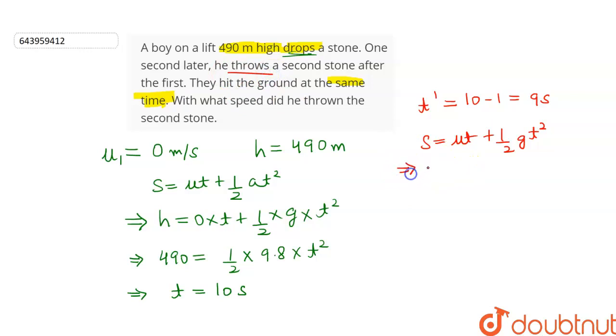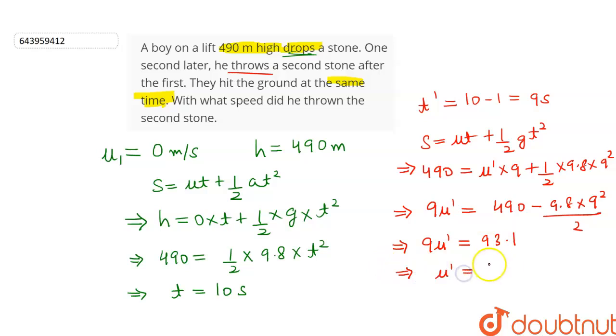The distance is same, so 490 equals, let the initial velocity be u dash into 9 plus 1 by 2 into 9.8 into 9 square. Let's simplify this equation. This will give us 9u dash equals 490 minus 9.8 into 9 square upon 2. 9u dash will be equal to 93.1. So u dash will be equal to 10.34 meters per second. So the answer of this question is that the speed of second stone is equal to 10.34 meters per second.